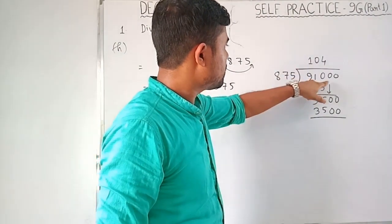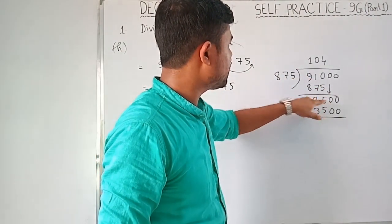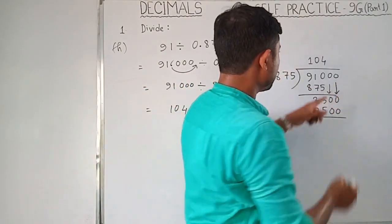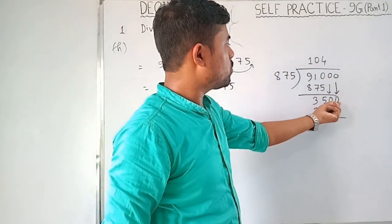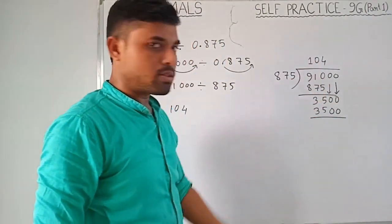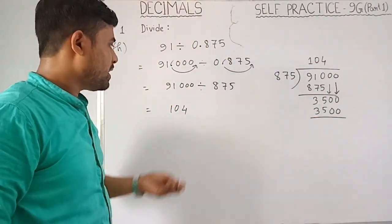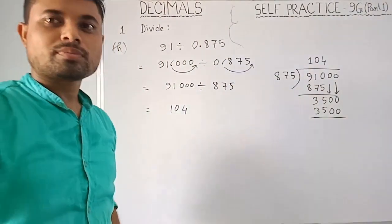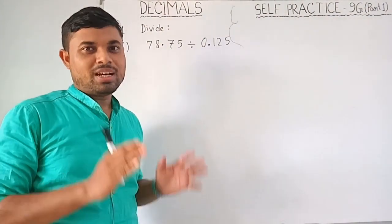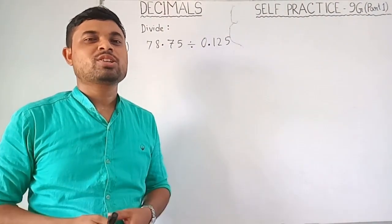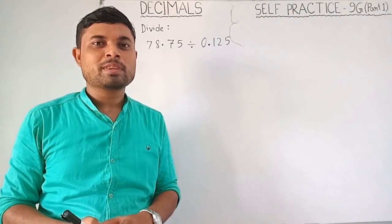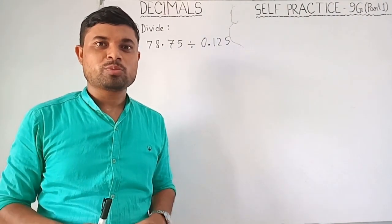Now just do the division: 875 into 91000. Divide step by step - when you bring down a digit and the number is smaller than 875, you need to place a zero and bring down the next digit. As you take two digits at a time in one step, put a zero. And this will go by 4, so you need 104. In this way, you will learn math and grow your interest in it.